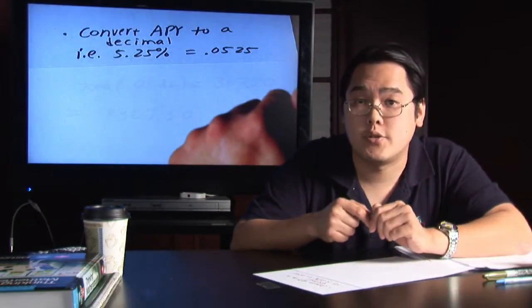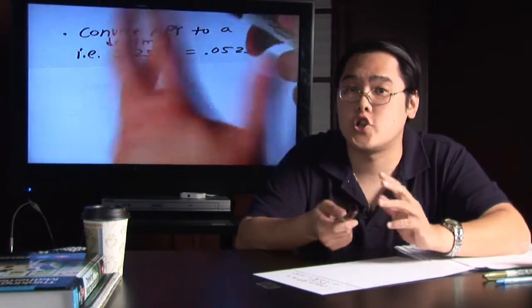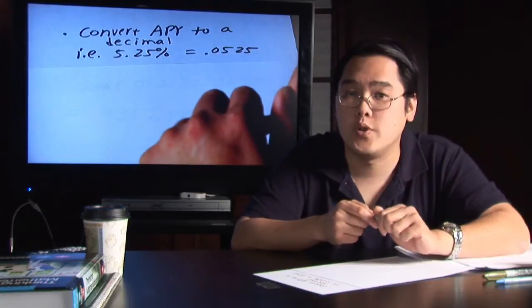Now, the place to go to for that is obviously just ask your bank what the APY is, and they should be able to give it to you as part of the terms of the savings account when you first opened it.